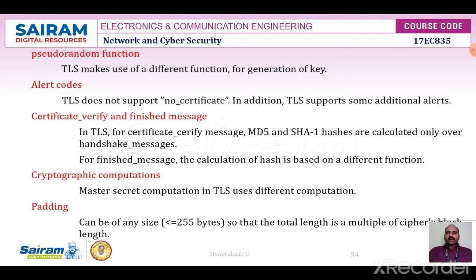For example, if P_SHA-1 is used to generate 64 bytes of data, it would have to be iterated 4 times producing 80 bytes, of which the last 16 would be discarded. P_MD5 would also have to be iterated four times producing exactly 64 bytes of data. Each iteration involves two executions of HMAC, each of which in turn involves two executions of the underlying hash algorithm. To make the PRF as secure as possible, it uses two hash algorithms in a way that guarantees security if either hash algorithm remains secure.